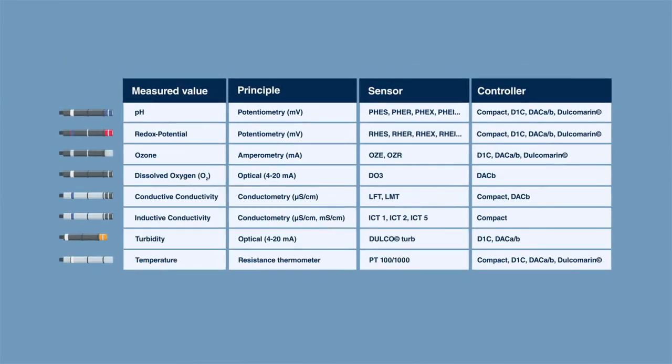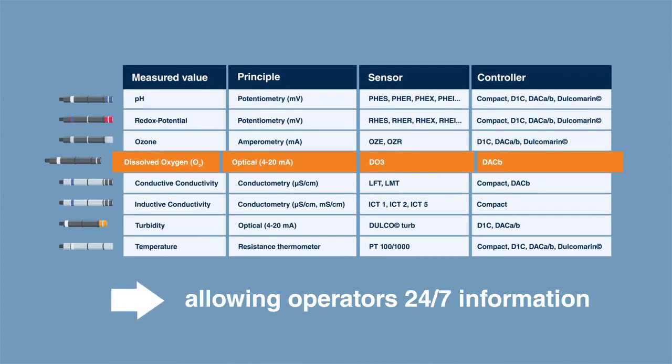ProMinent provides a broad range of sensors and controllers for the overall process in RAS, allowing operators to have 24/7 information.